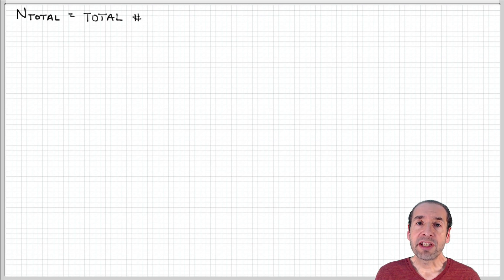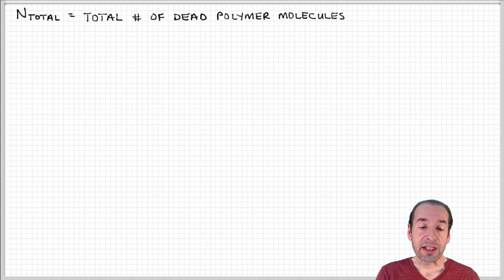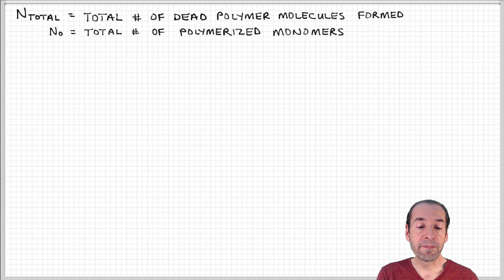Let's summarize some of these terms that we've defined in our calculation. N-total represents the total number of dead polymer molecules that are in our ensemble. And n-naught represents the total number of polymerized monomers.